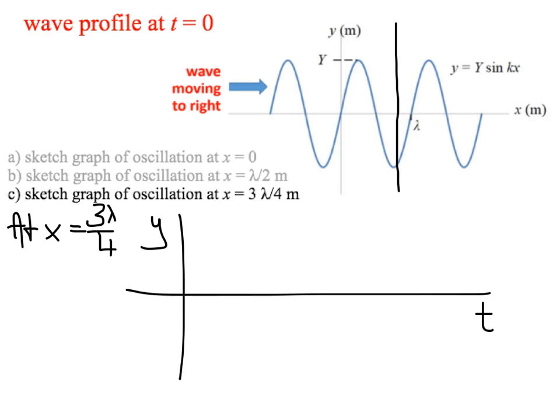Displacement versus time. Well, now at t equals 0, and when x equals 3 lambda over 4, we can see that the displacement is equal to negative of the amplitude.